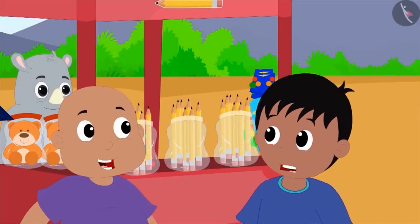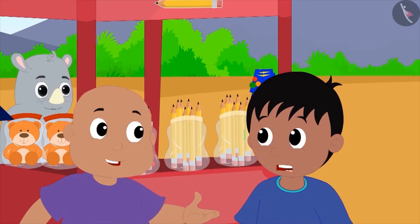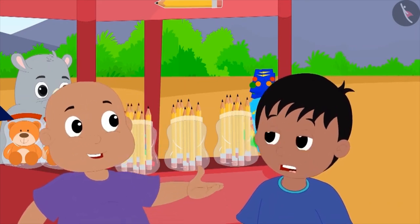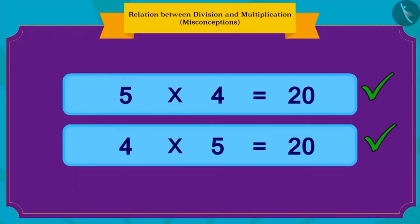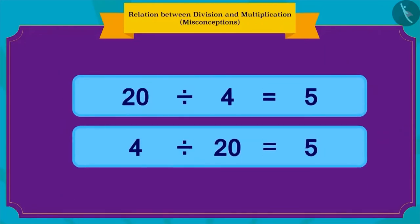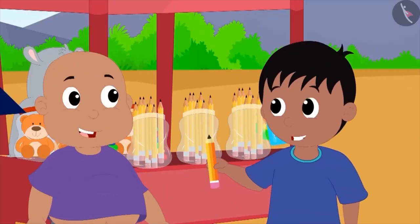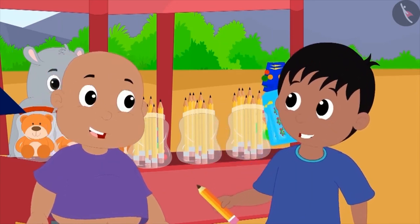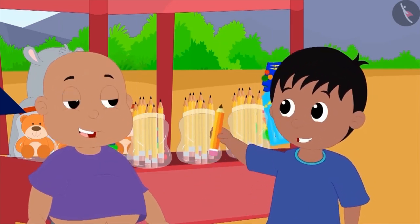Bablu laughed and explained to Raju that even though division and multiplication have a relationship, the way we do for multiplication, we cannot write division sums by changing places of numbers. Raju took Bablu's pencil from him and said that with that pencil, he would practice his math skills and become an expert at it.